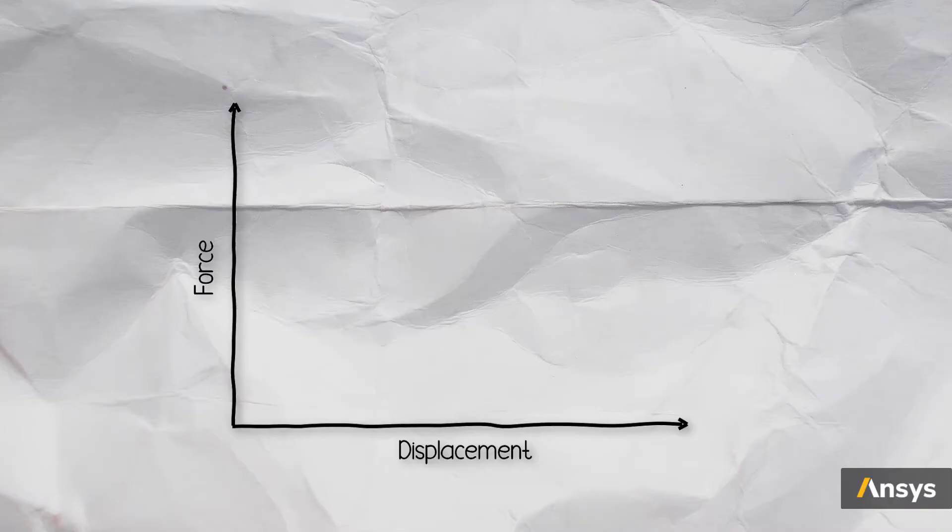To understand them, let's look at the force displacement curve for a typical system that buckles. Usually, a monotonously increasing force with displacement is seen at the start. The slope of this curve is nothing but the stiffness of the structure.